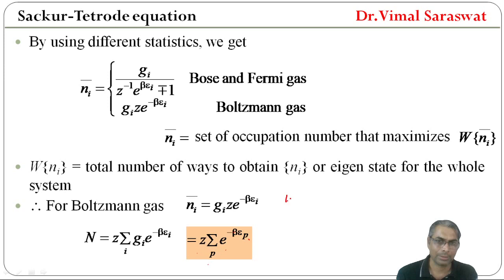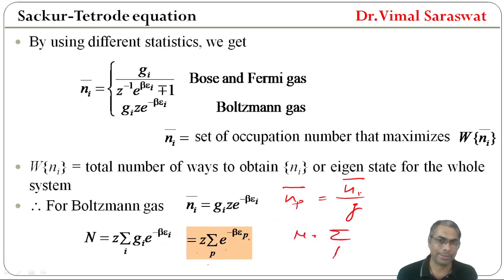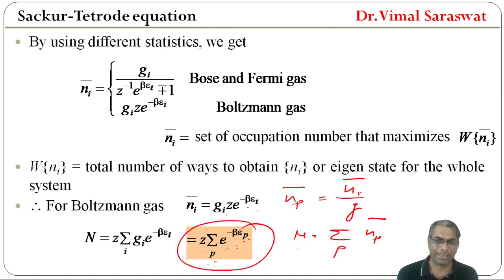Using N-bar-p, where N-bar-p = Ni-bar / G, we get N = Σp N-bar-p, and N-bar-p = Z · e^(-βEp). So N = Z · Σp e^(-βEp).